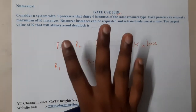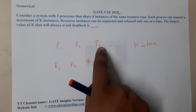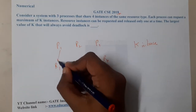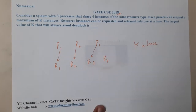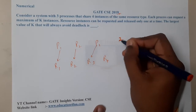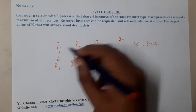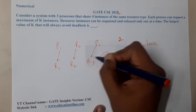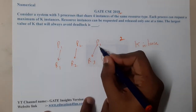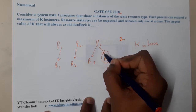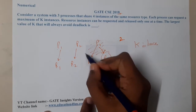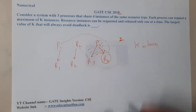We have four resources and three processes. If each of these processes takes exactly one resource, and the requirement is two, then any one of them will take a particular resource and the rest can release their resources. If P3 takes that particular resource, P3 will execute and release both resources, which can then be allocated to others based on their requirements.